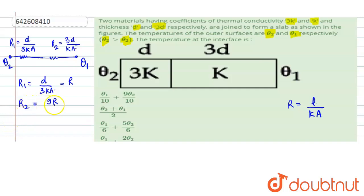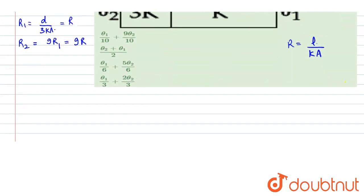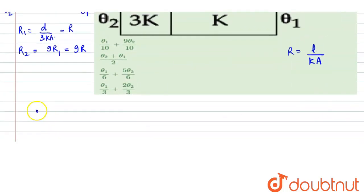So R2 equals 9 times of R1. That is also equals to 9 into R. Now we can say that we have two resistances R and 9R. This is at temperature theta2 and this is at temperature theta1. Can we find the thermal current?